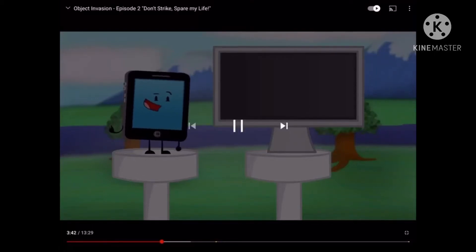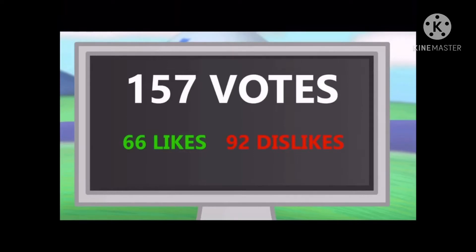Welcome to the elimination, MLG gangsters. As you guys remember from last episode, OJ killed Skittle and put him in your milkshake instead of M&M's. We have a total of 157 votes, with 66 likes and 92 dislikes.